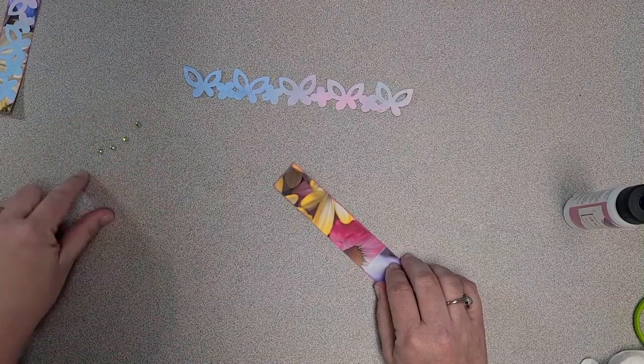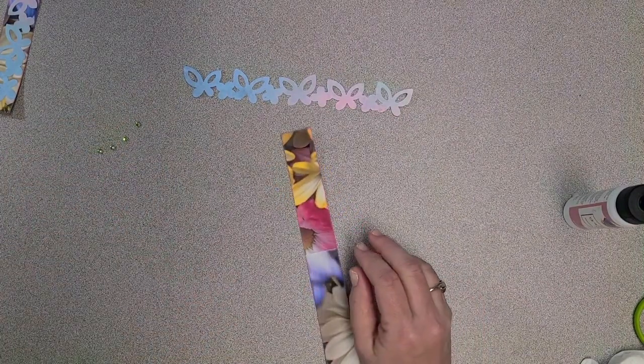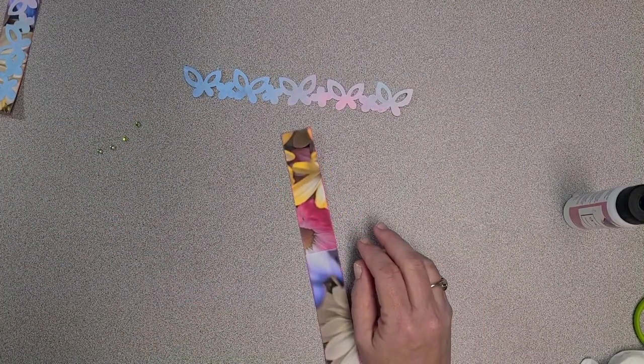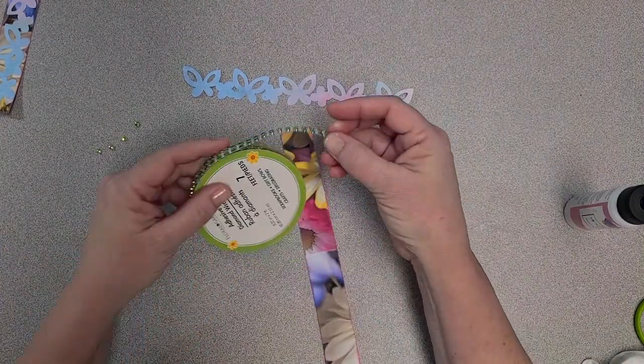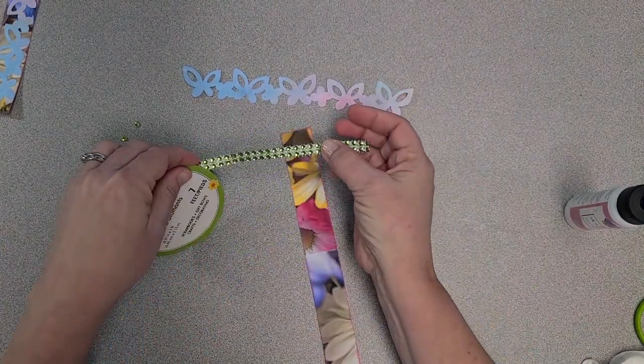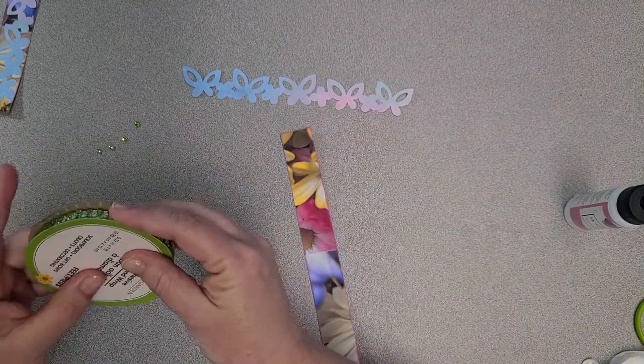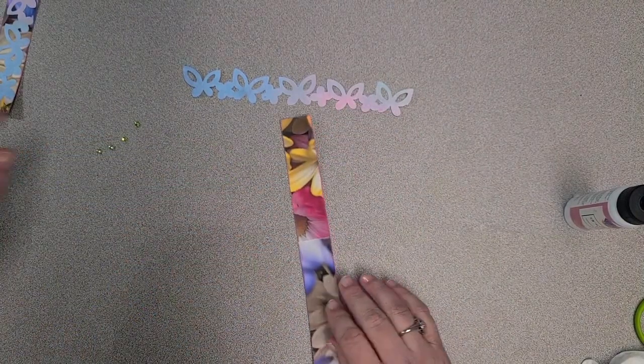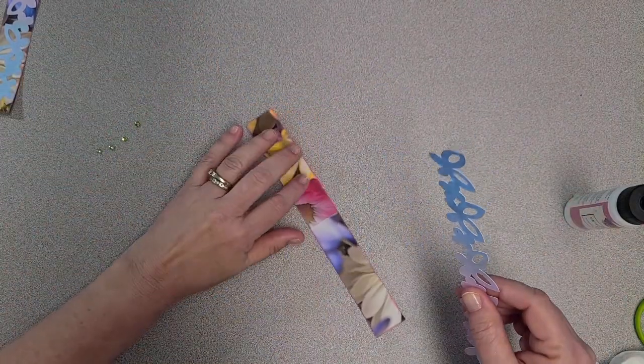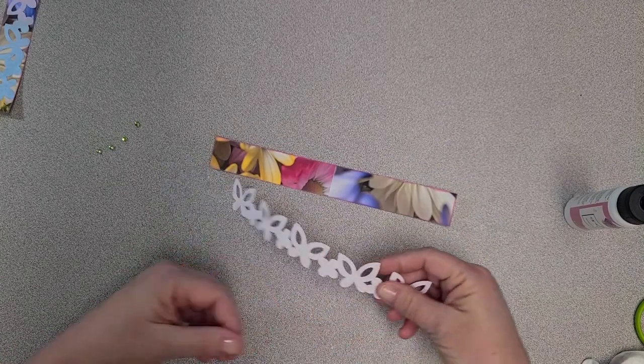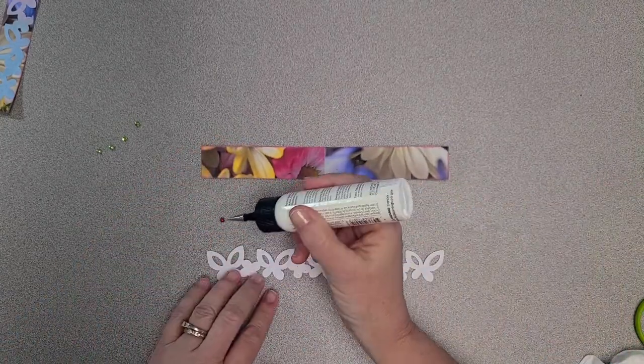And then here you can probably barely see them, but I've got four pieces of this diamond wrap adhesive bling from Dollar Tree. And on my daisies, I did ink around the edges on my daisy page.